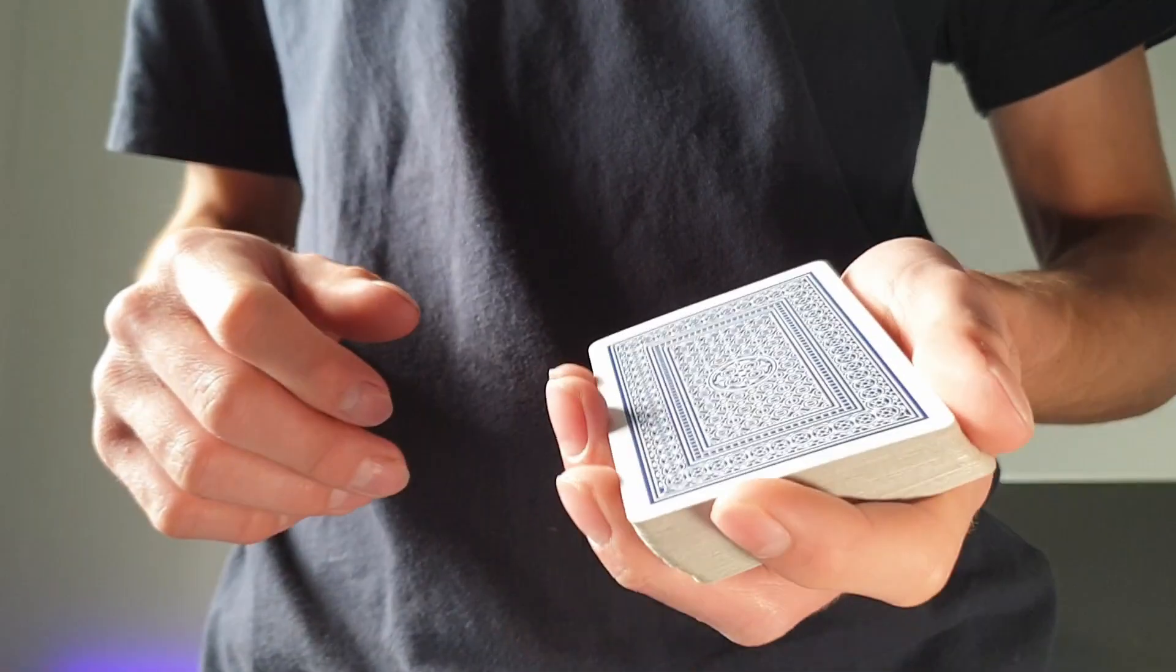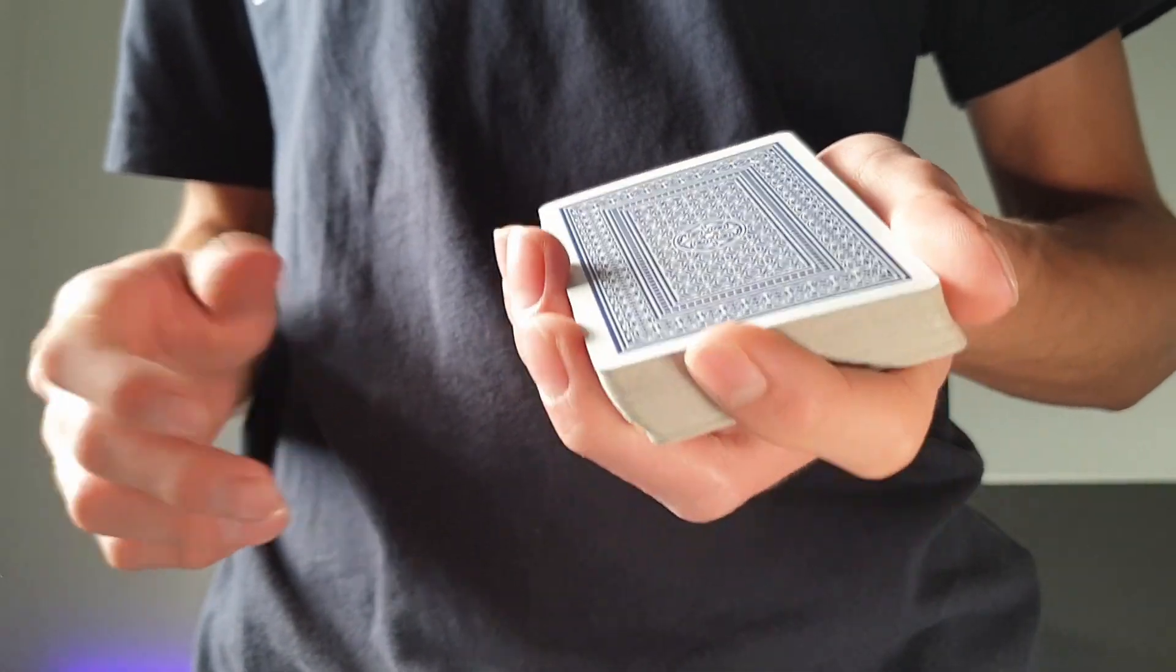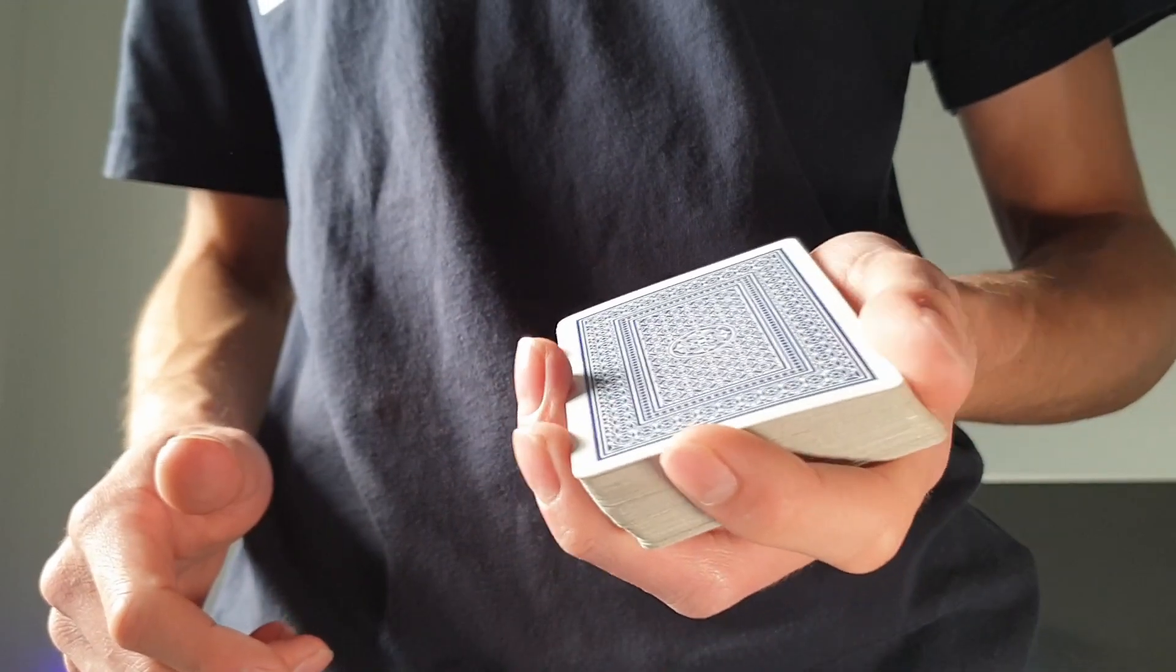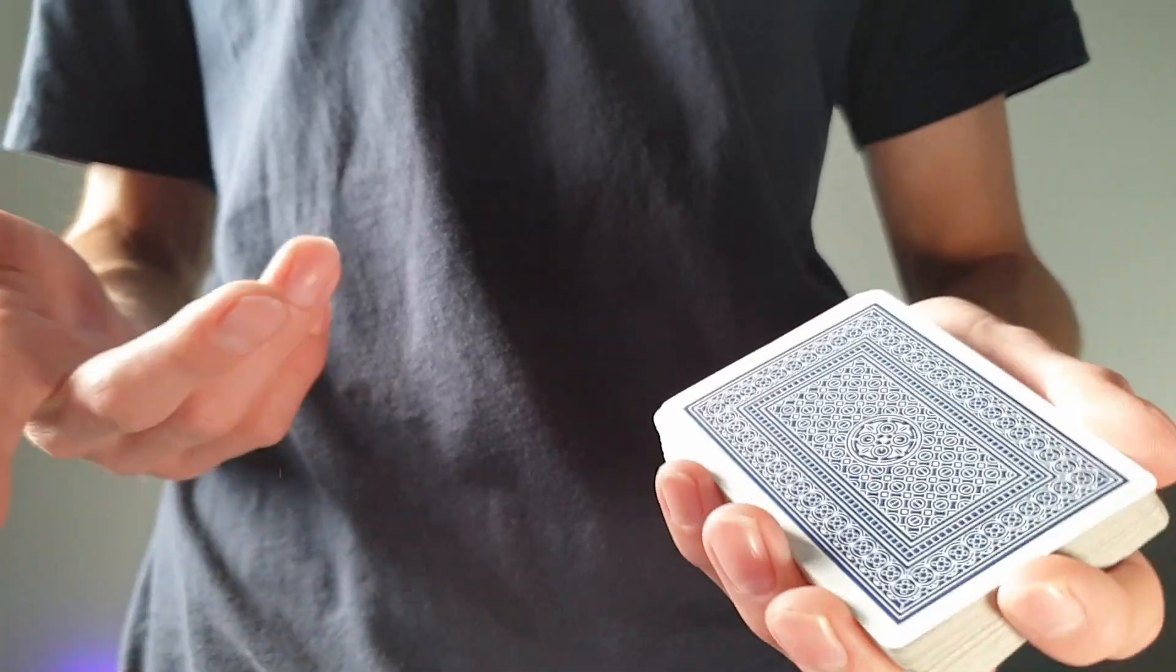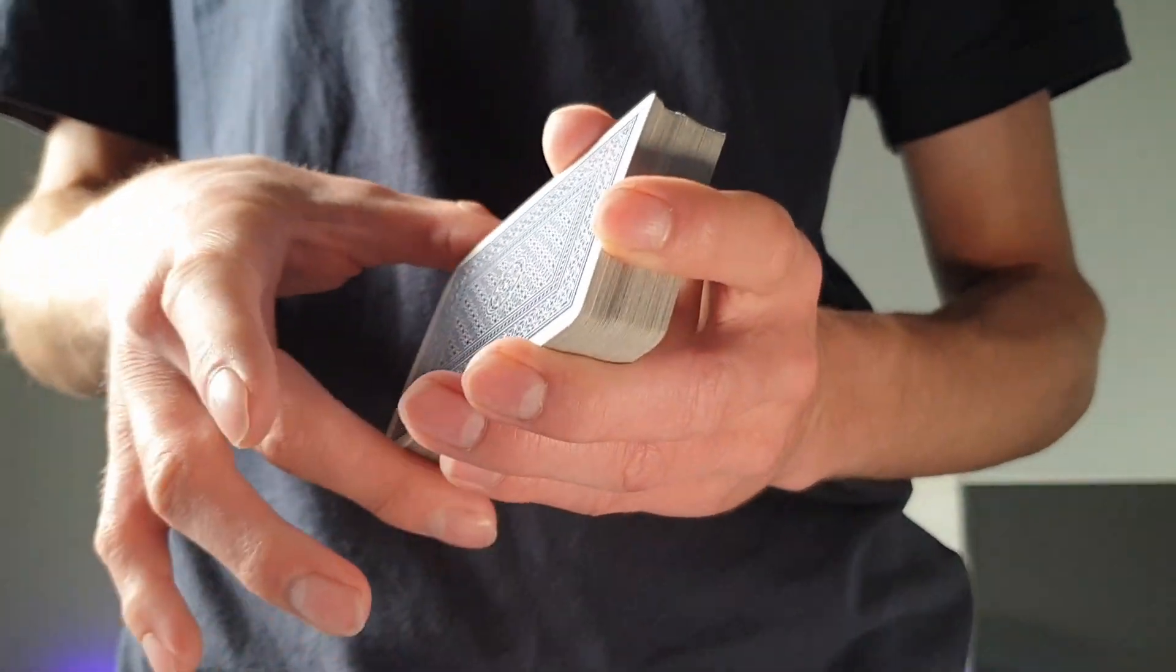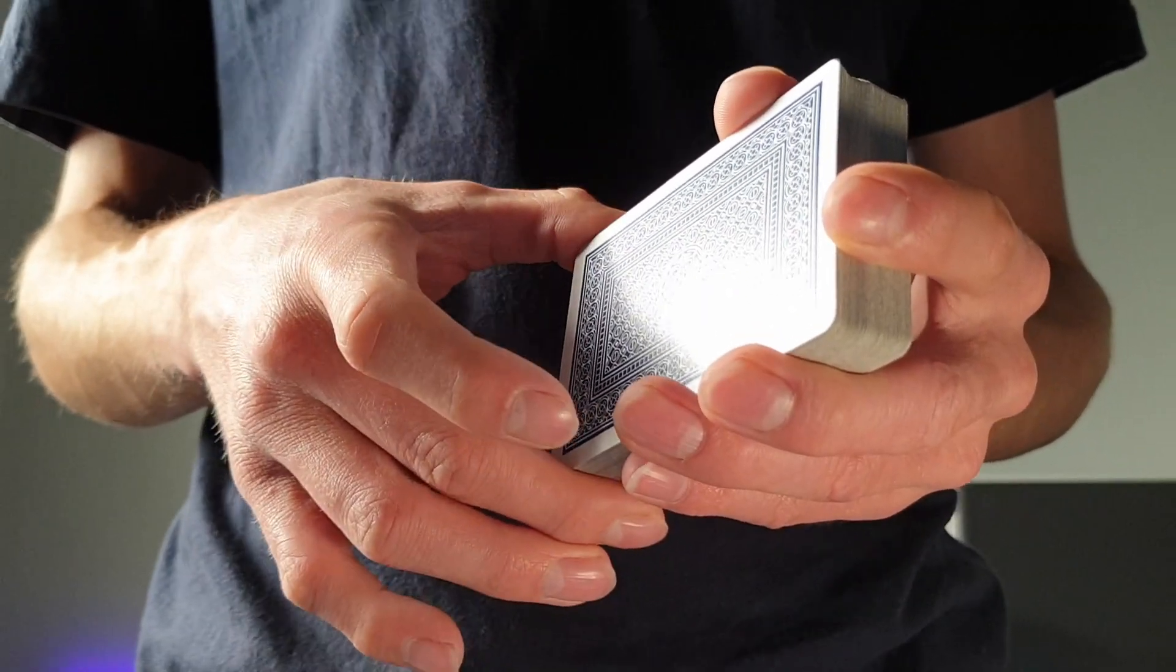To begin, first we start a mechanics grip, and that looks like this with just the three fingers along the side, index finger on top and thumb on this corner. Then you tilt the cards over, and using your thumb and your middle finger, you're going to grab all the cards here.